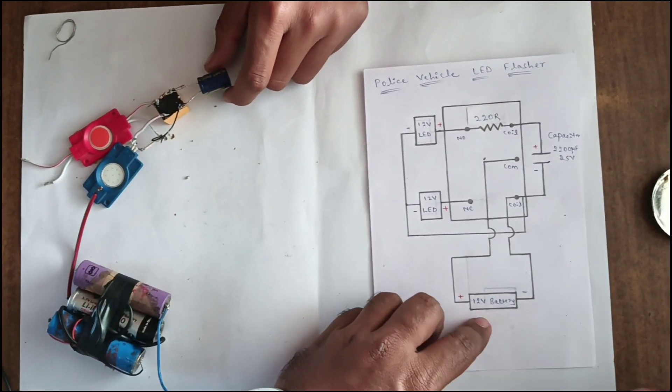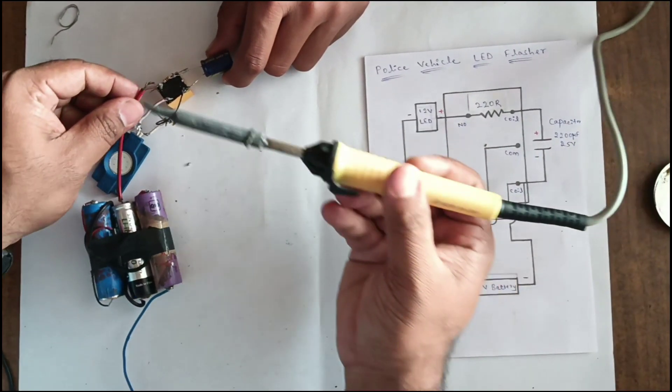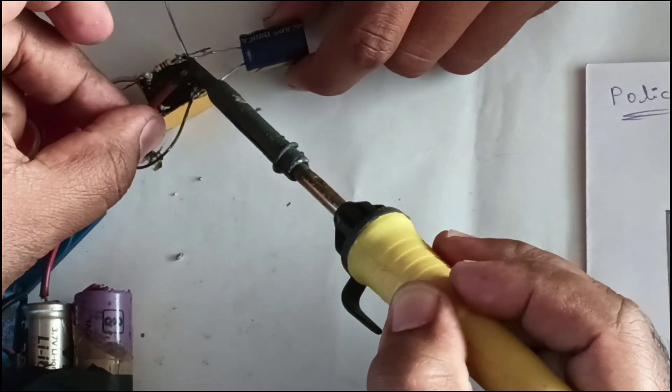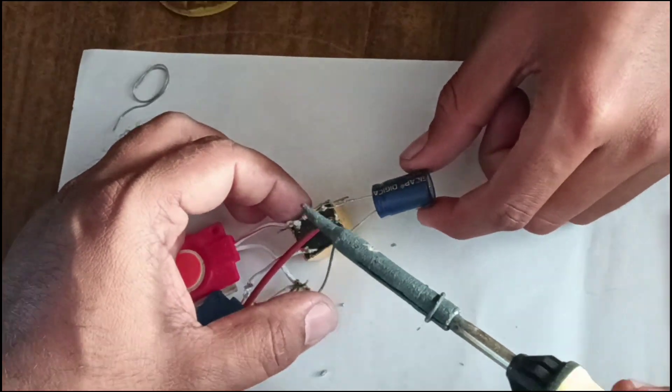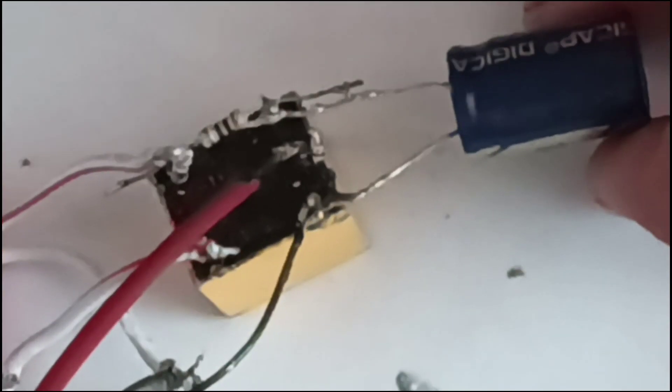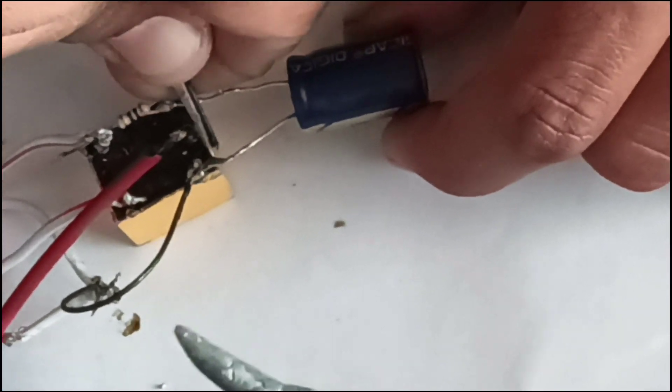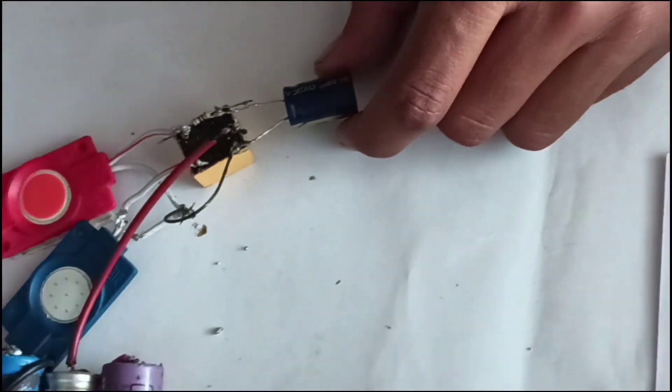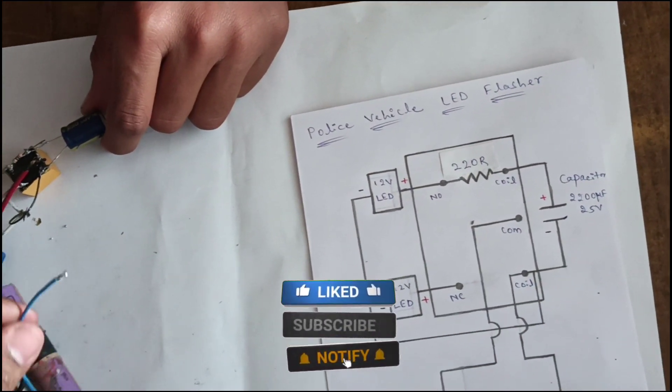Positive of the 12V battery is given to common. And negative of the 12V battery is given to coil.